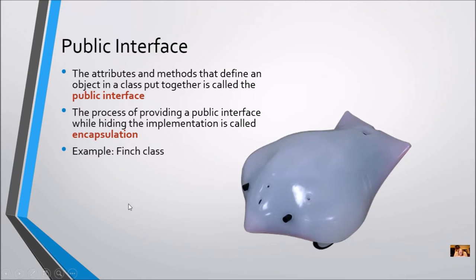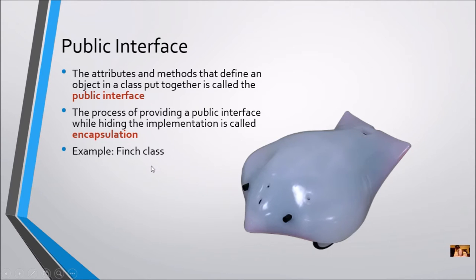A class gives you a public interface. We saw this with the Finch robot because somebody else created that class and we just used it. The attributes and methods that define an object in a class together make up the public interface. The process of providing a public interface while hiding the implementation is called encapsulation. When we used the Finch class, we called the methods without knowing or caring how they were programmed — we just knew what they were and how to use them.